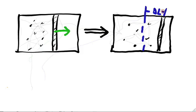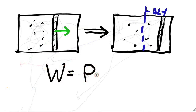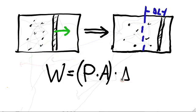To compute the work, we'll just use the formula work equals force times distance. If we assume that the pressure of the gas was constant the entire time, then we'll find that the force on the wall was equal to the pressure times the area, and so the work is pressure times area times delta L. Area times delta L is just the change in volume of the gas, delta V. So the work was pressure times delta V.